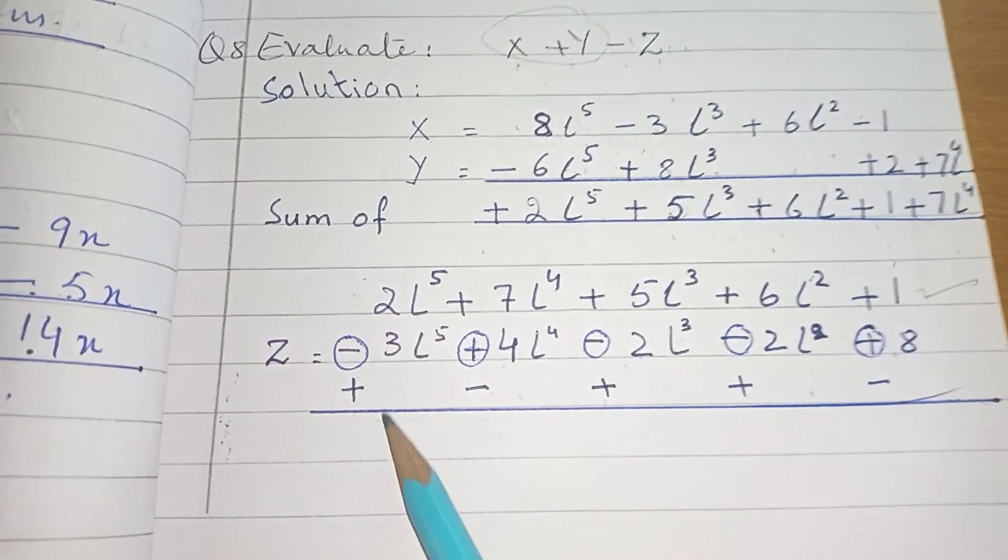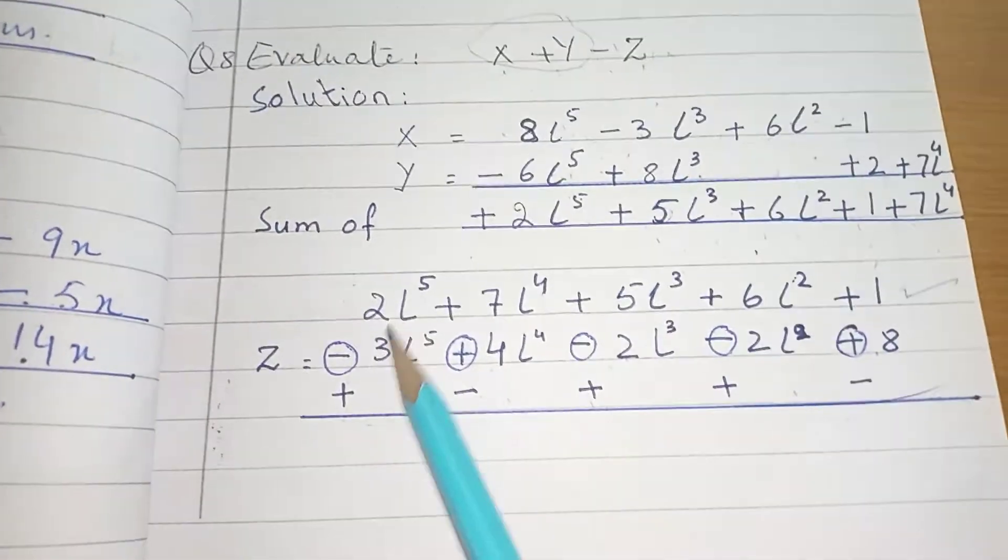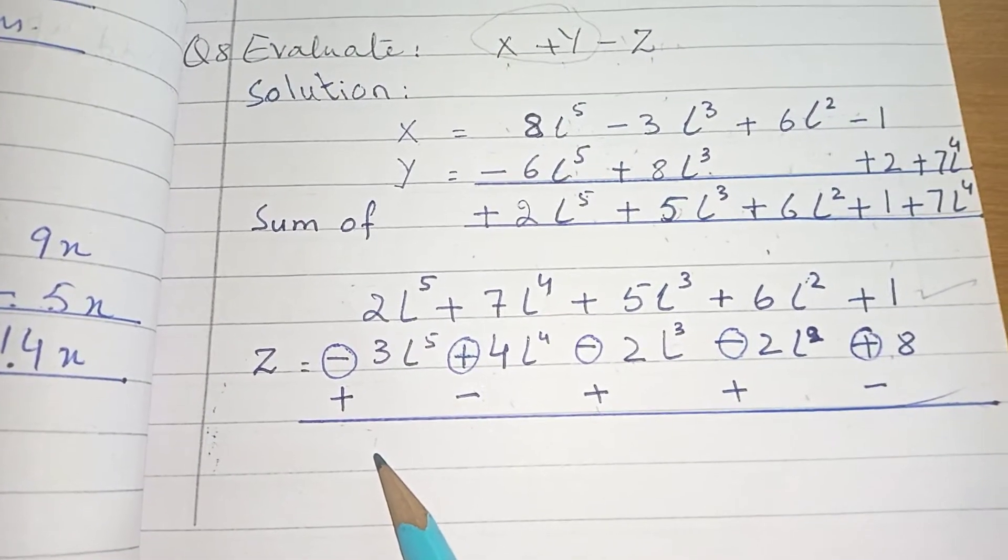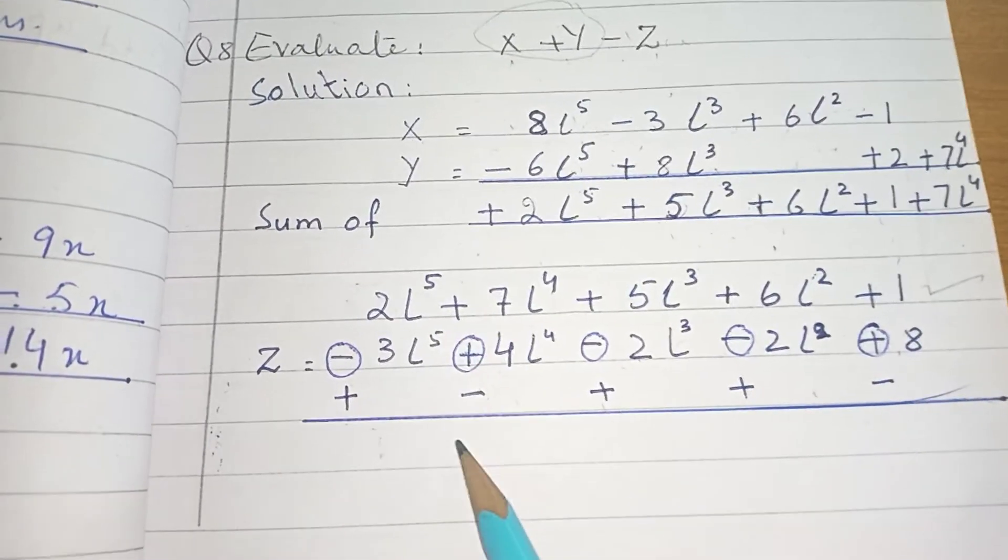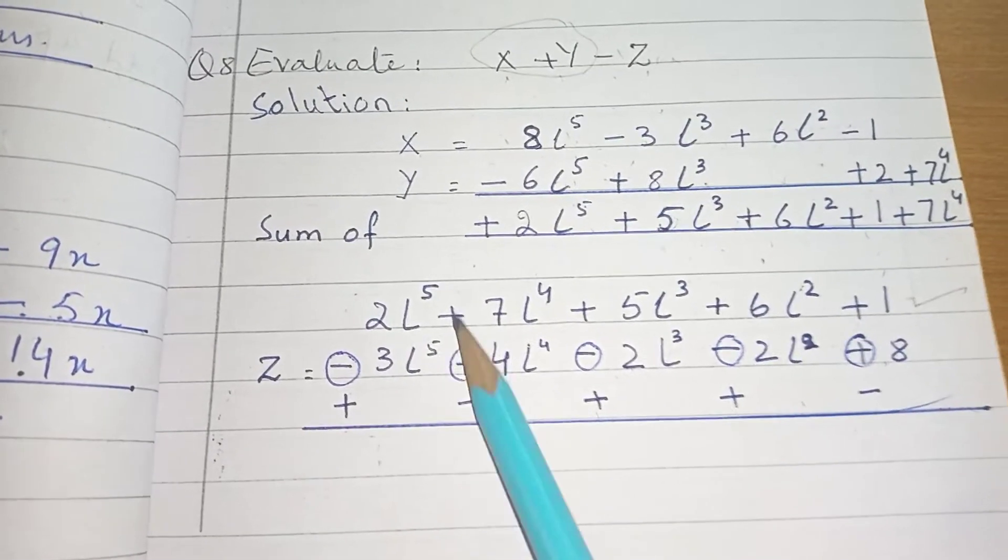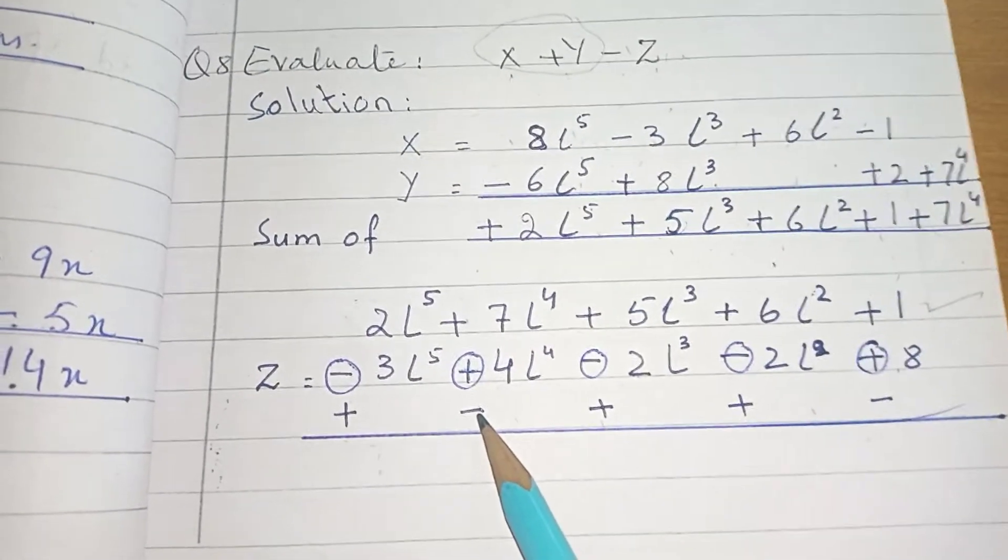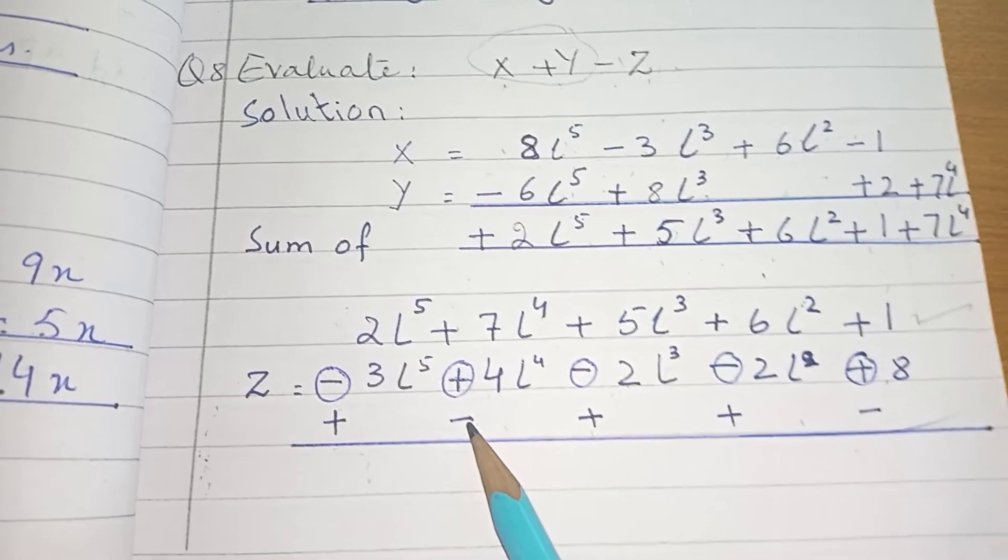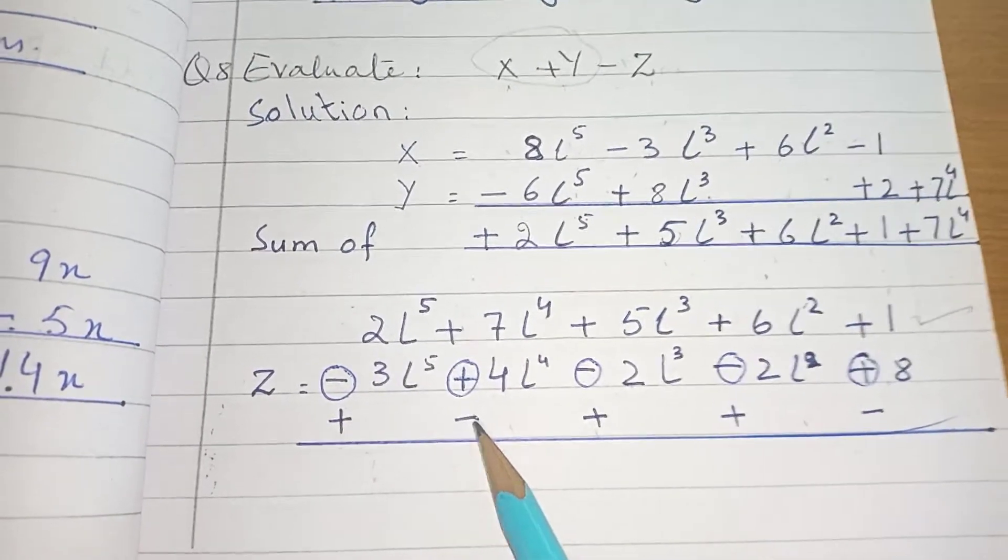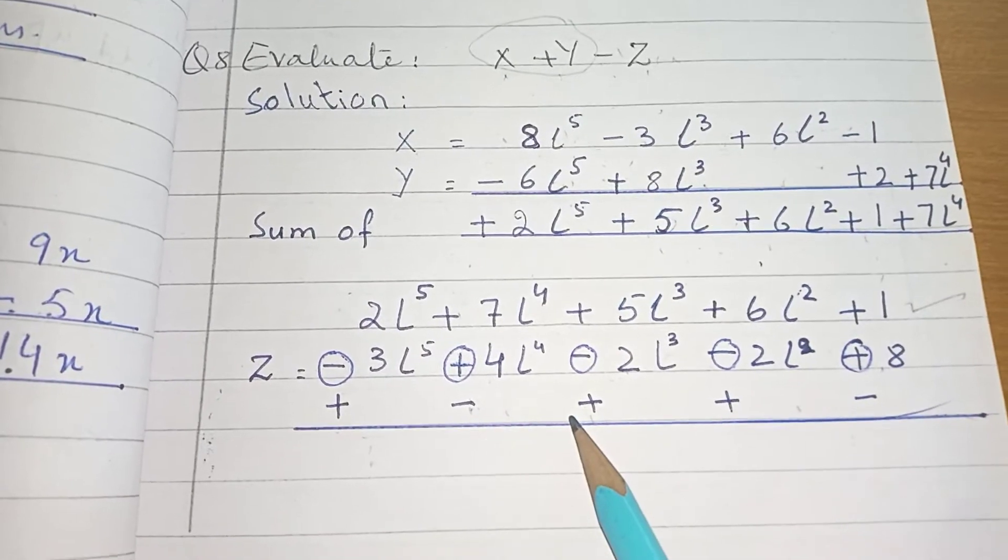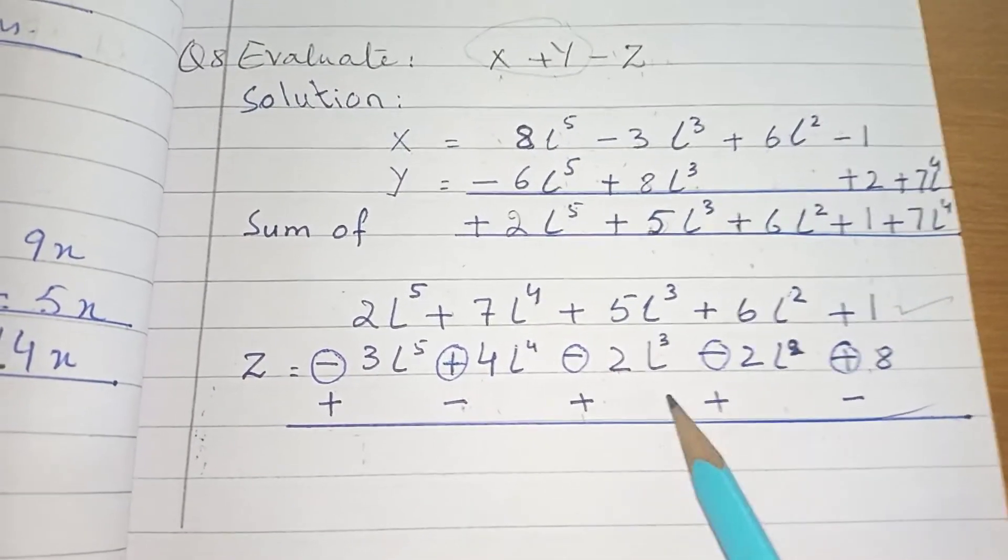Plus plus plus. Hidden sign is plus, so plus plus plus. 3 plus 2, 5, 5L power 5. Minus. Plus minus, it's a plus sign, minus sign. Plus minus, minus. So we minus it. 7 minus 4, 3 is left, 3L power 4.